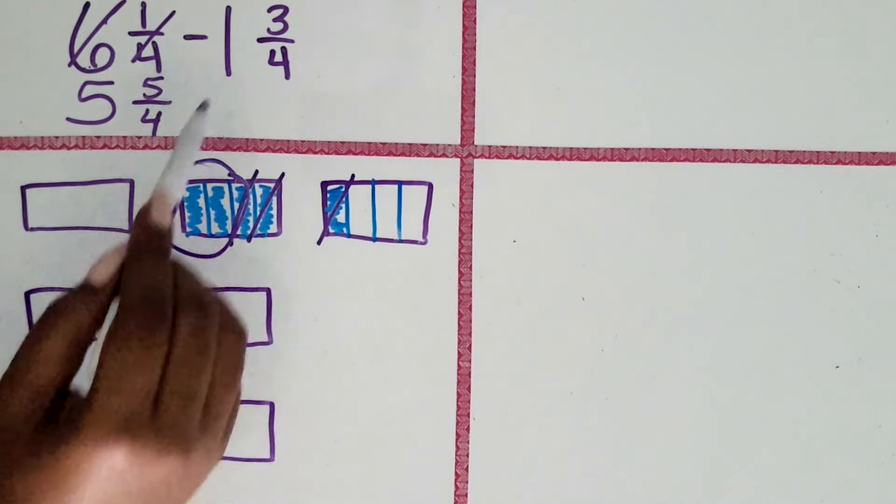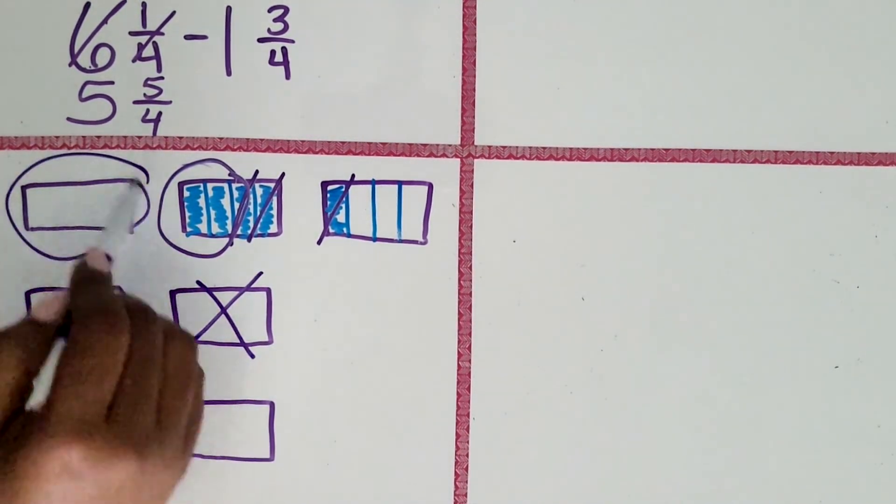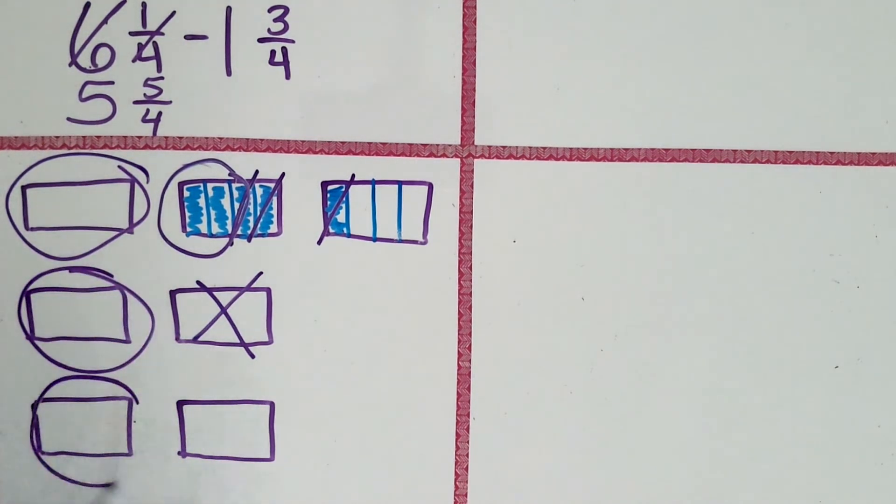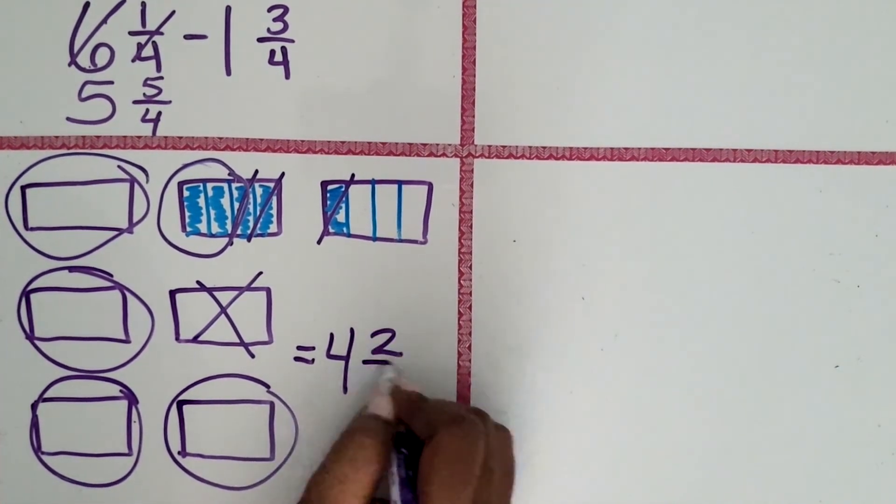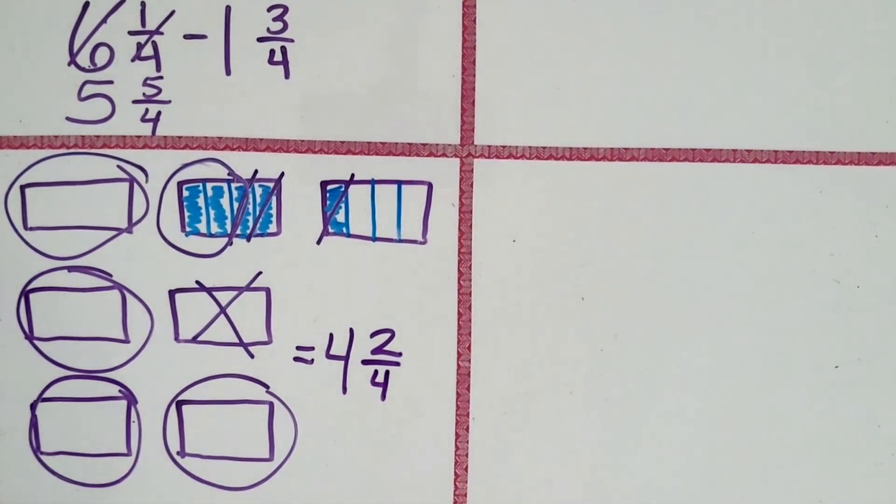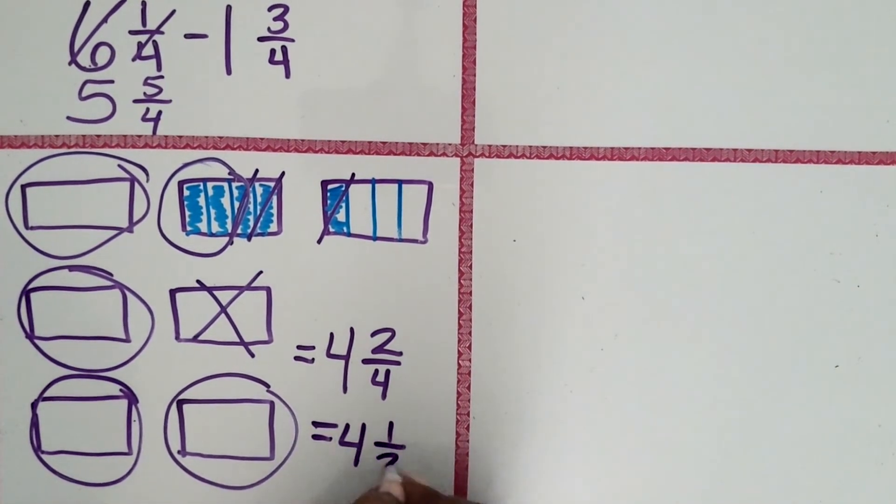How many wholes? We can subtract one whole. How many wholes remaining? One, two, three, four. So it equals four and two-fourths, again which can be simplified into four and one-half.